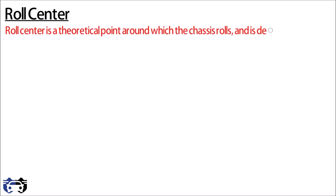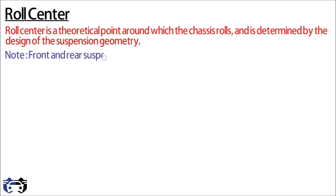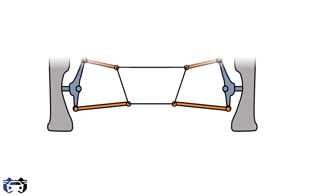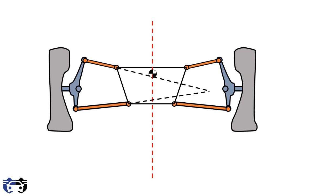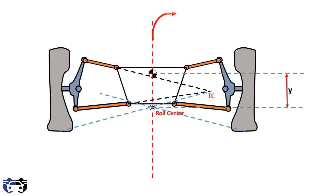Now let's see what is roll center. Roll center is the theoretical point about which the body rolls, determined by the design of the suspension geometry. Note that front and rear suspensions have different roll centers. For a symmetric car, extending the imaginary lines of the upper and lower wishbones gives the instantaneous center IC. Drawing a line between the bottom center of the tire and the instantaneous center, the intersection with the vertical centerline is the roll center — the point about which the chassis rolls.